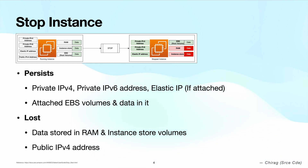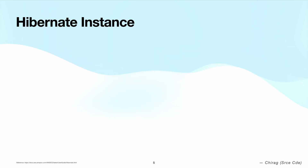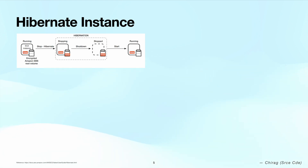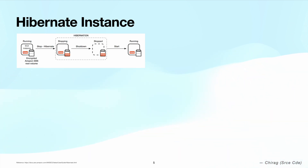Now let's see what happens when you hibernate an EC2 instance. Hibernation is similar to stopping an instance and the end state results in a stop state. But while you hibernate, one additional step occurs — saving the content of the RAM to the EBS root volume before shutting down the instance. When you start the instance from the hibernation state, the saved content of RAM in the EBS volume is loaded back to the RAM, and then the instance state changes to running state, meaning you can resume your work from the point before hibernating.